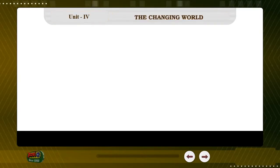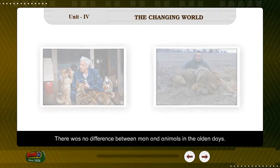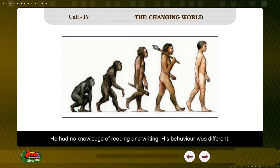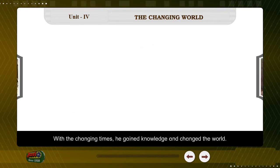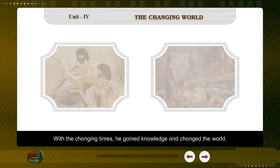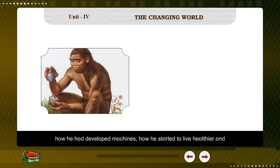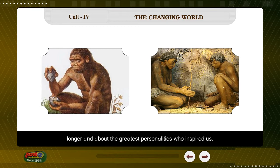Unit 4: The Changing World. There was no difference between man and animals in the olden days. He had no knowledge of reading and writing, and his behavior was different. With the changing times, he gained knowledge and changed the world. In this unit, we learn about how man's knowledge started to increase, how he developed machines, how he started to live healthier and longer, and about the greatest personalities who inspired us.